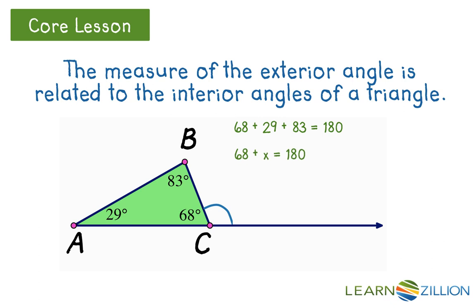In order for both of these equations to be true, x must equal 29 plus 83, or 112 degrees. Therefore, any exterior angle is equal to the sum of the other two interior angles.